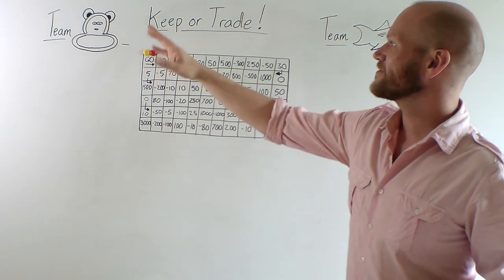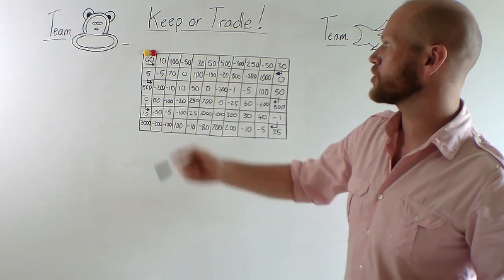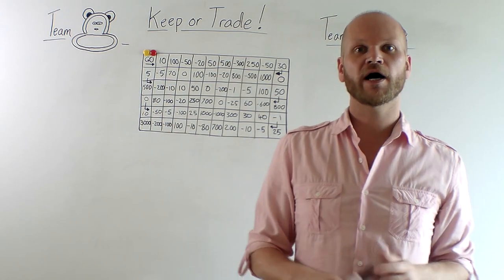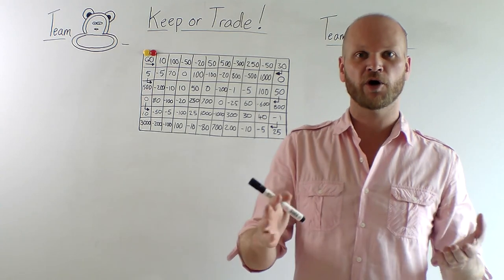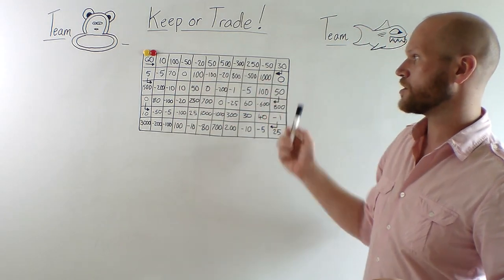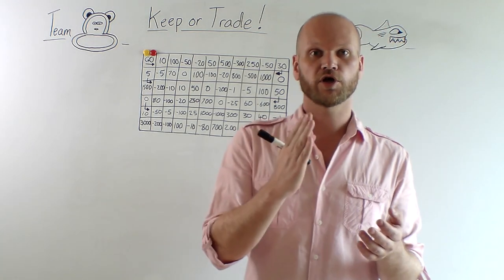We have two teams, Team Monkey, Team Shark. Today Team Monkey is yellow, Team Shark is red. Before class, prepare lots of bits of paper with different numbers on the paper. You can have similar to here, so it could be plus 1,000,